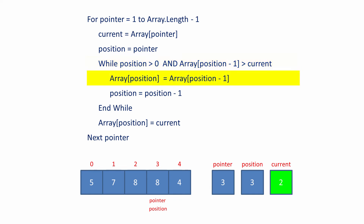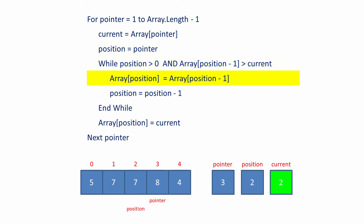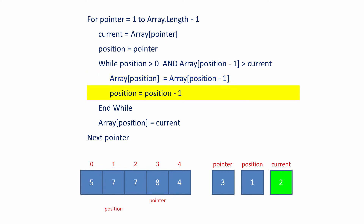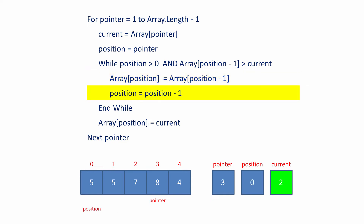So the inner loop begins again. The value 8 is copied one place to the right. Position is decremented by 1. The inner loop can run again — position is bigger than zero, and 7 at position minus 1 is bigger than 2. 7 is copied one place to the right, overwriting the superfluous 8. Position is decremented, and because position is still bigger than zero and 5 is bigger than 2, the inner loop runs again. 5 is copied one place to the right. Position becomes zero this time, so the inner loop is not allowed to continue.